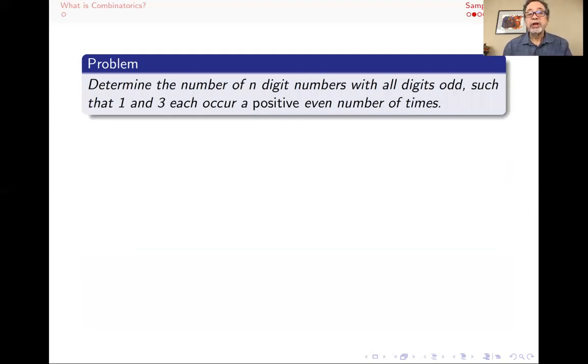Here's yet another one. Determine the number of n-digit numbers with all digits odd. So only using odd digits like 1, 3, 5, 7, and 9. And you want that 1 and 3, both of them occur a positive even number of times. So you want 1 and 3 among your digits. So n has to be at least 2 so that you can do that.